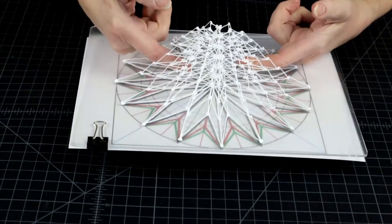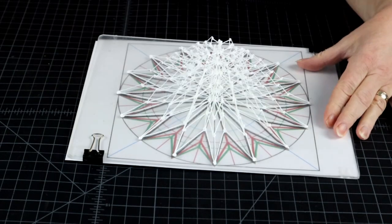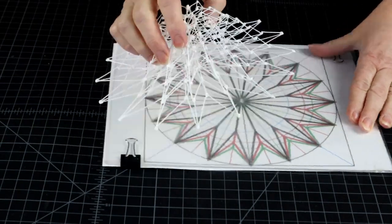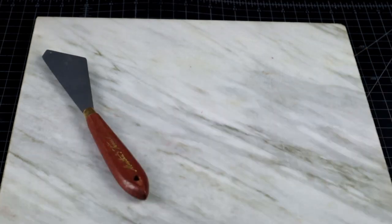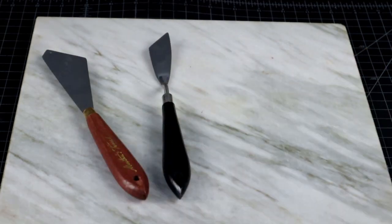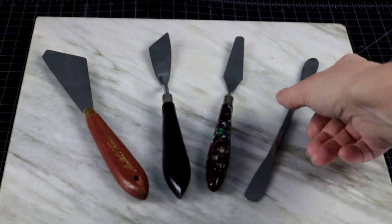Ideally, the piece should stay safely stuck to your surface until you decide to take it off, usually with some removal tool. Thin spatulas and palette knives work well for this.